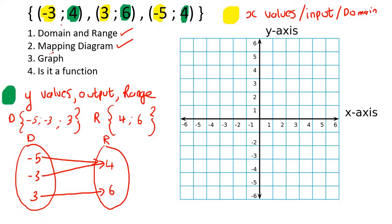Now we're just going to go graph it - plot all of these points. So minus 3 and 4 would go here. Then 3 and 6: x is 3, y is 6. By now you guys are pretty good at plotting these points. And then minus 5 and 4 goes here.